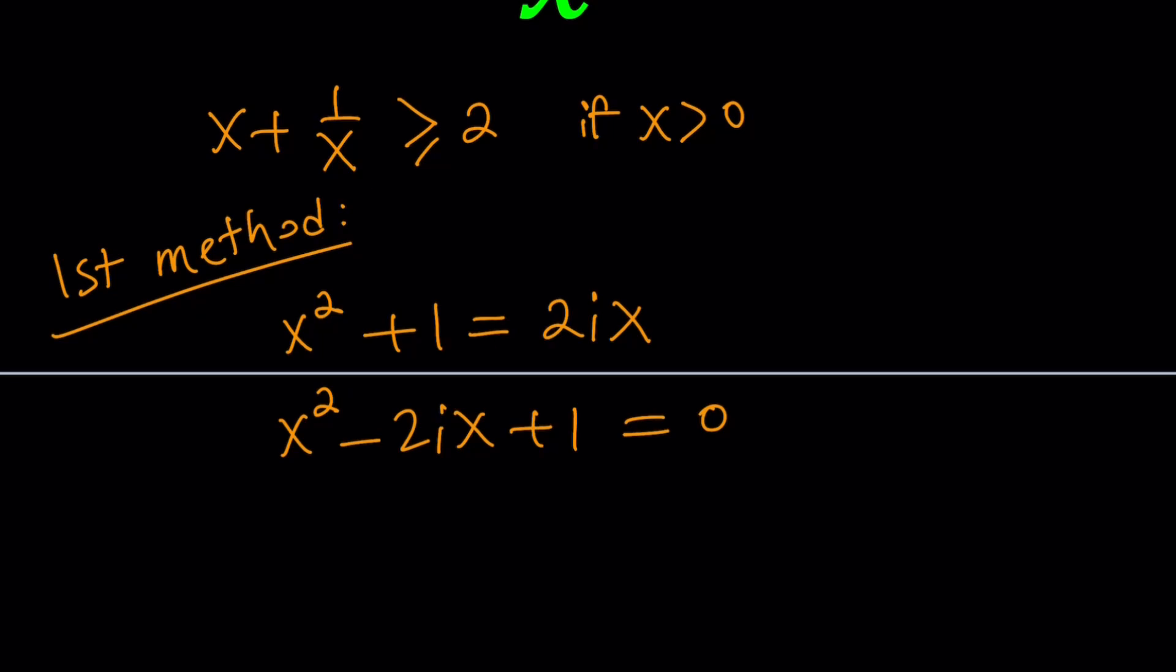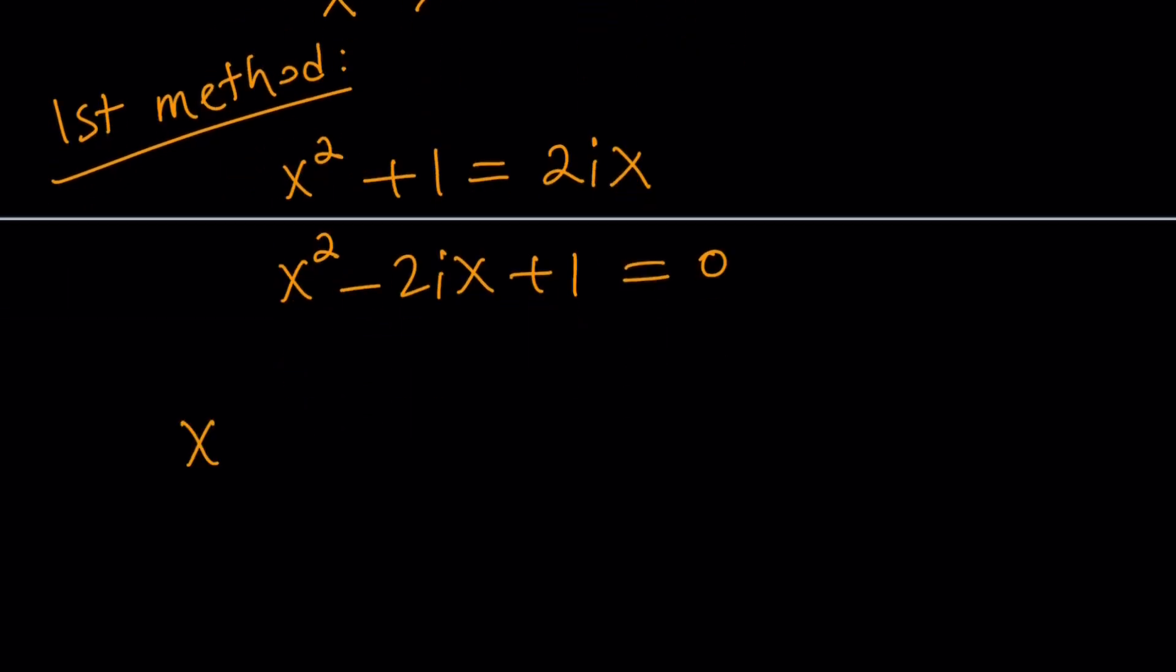Let's do it. So, the quadratic formula gives us the following. x equals negative b. The coefficient of x is negative 2i, so its opposite is going to be 2i. Plus minus the square root of, you've got to be careful here because you're going to be squaring some imaginary numbers. So, it's going to be negative 2i squared, which is 4i squared, minus 4ac, and that would be just a minus 4. Because a is 1. And all of that is divided by 2.